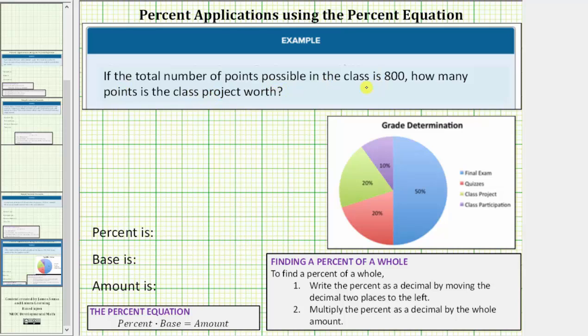If the total number of points possible in the class is 800, how many points is the class project worth?